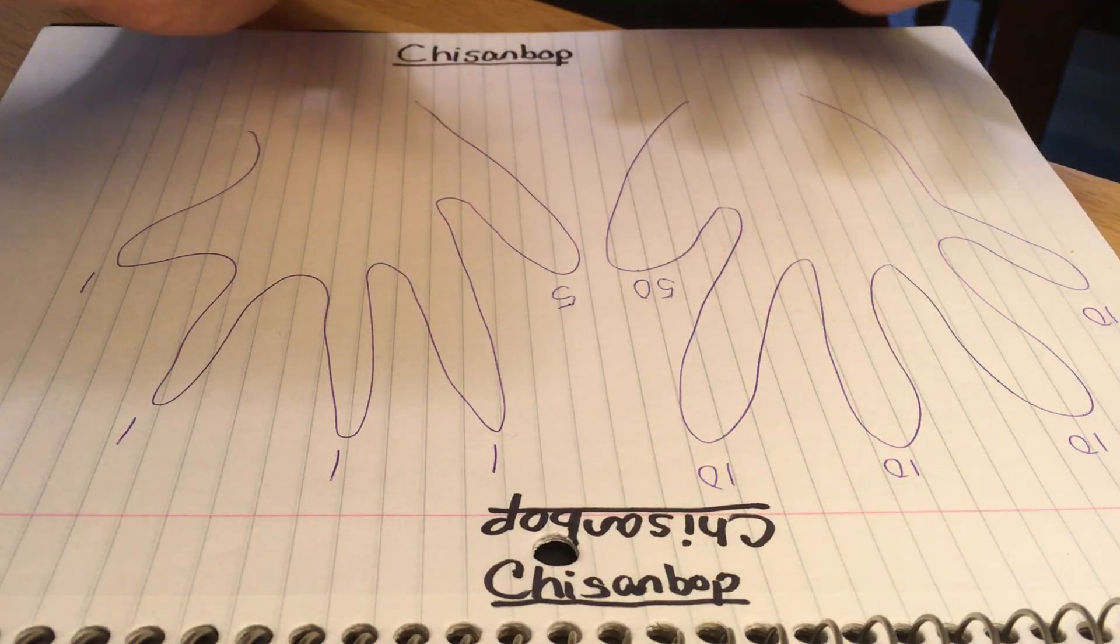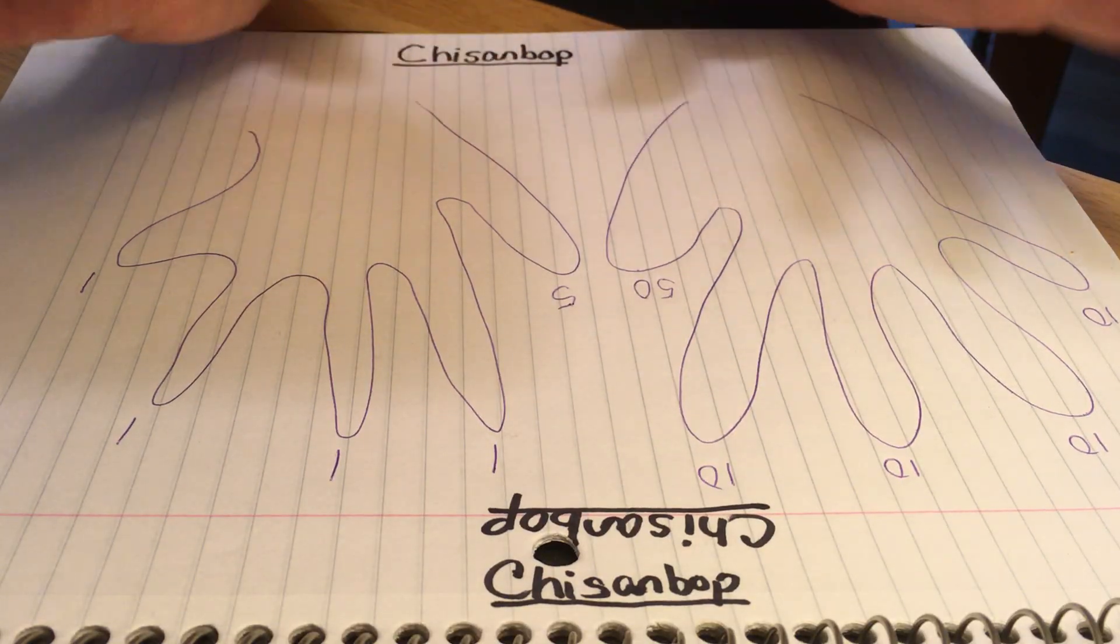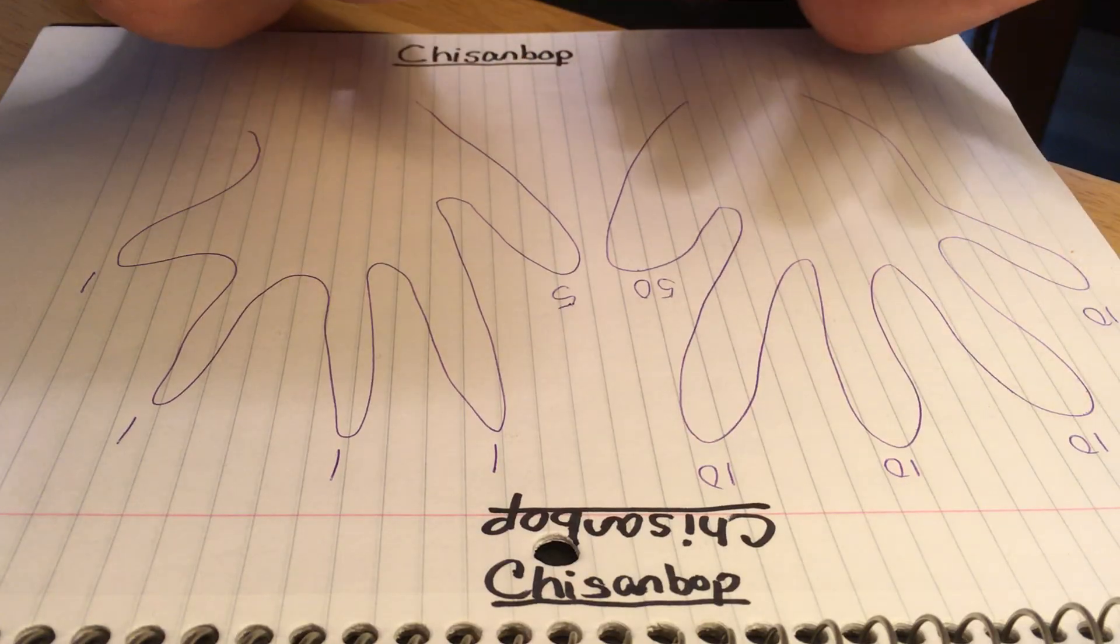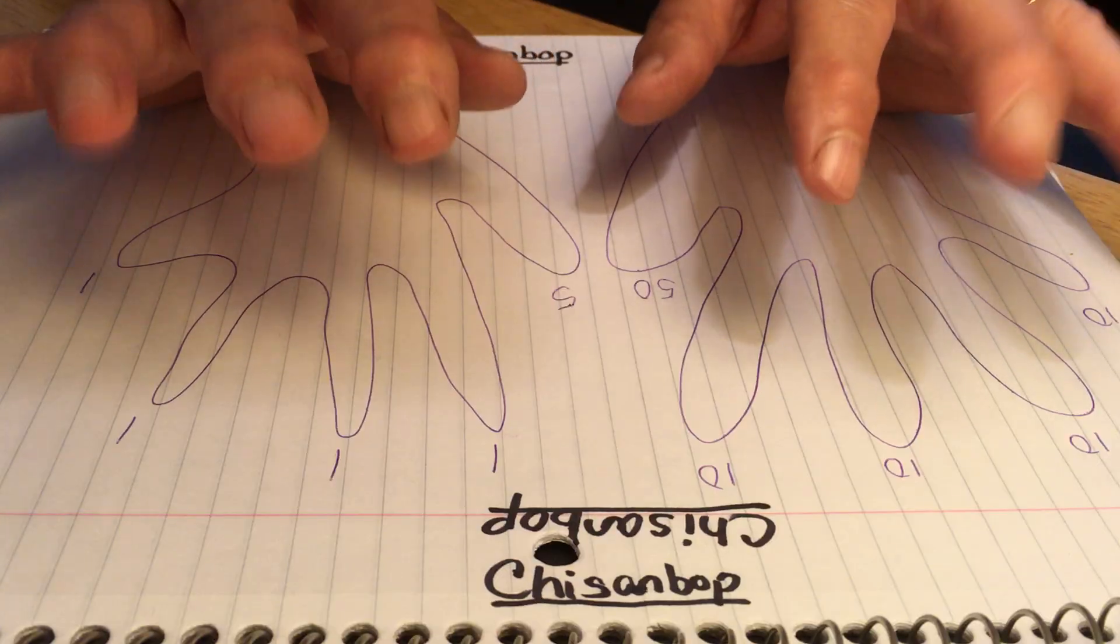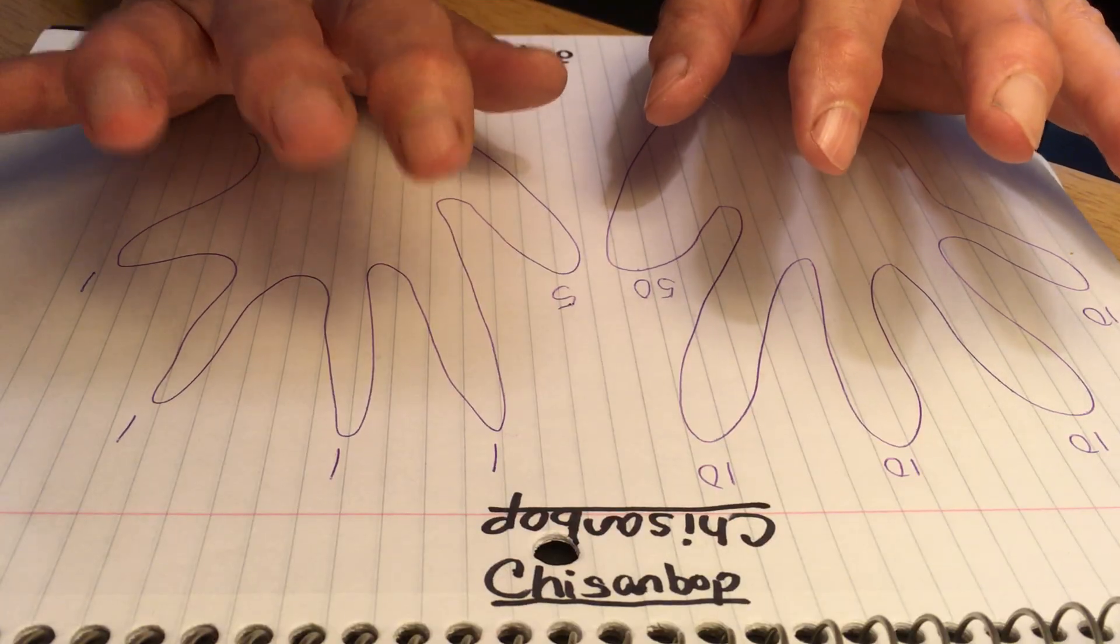This is called Chisanbop, and to use it, it's kind of like typing. You put just your wrist on the table and you loosely keep your hands hovering above the table.